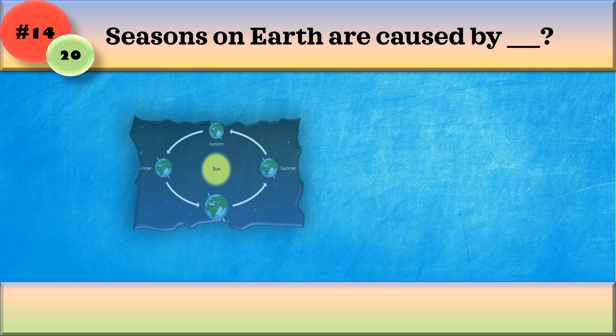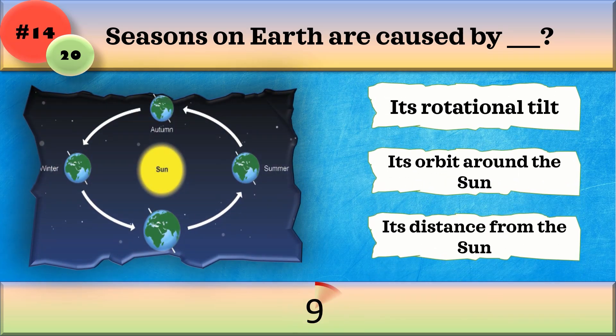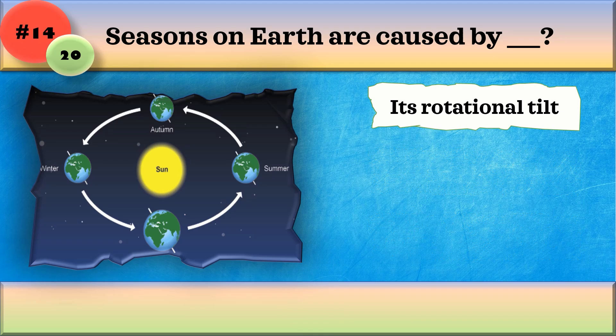Seasons on Earth are caused by its rotational tilt, its orbit, or its distance from the sun. Its rotational tilt.